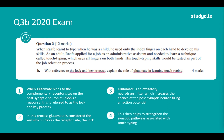Mark four: this then helps to strengthen the synaptic pathway associated with touch typing. So to summarise the marks: mark one is explaining the lock and key process; mark two is identifying which is the lock and which is the key; mark three is explaining the role of glutamate; and mark four is explaining what glutamate does in the context of learning and how it helps.